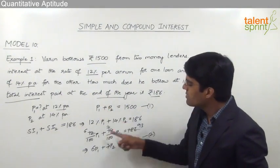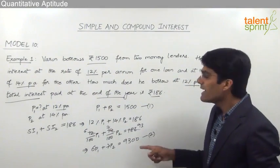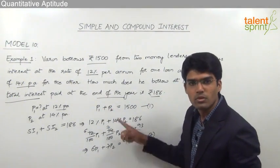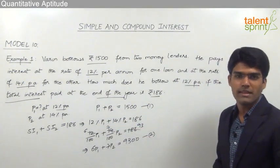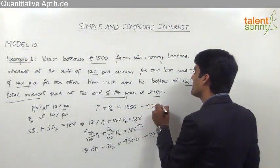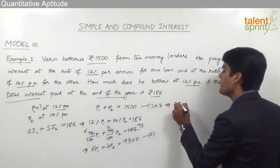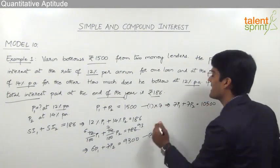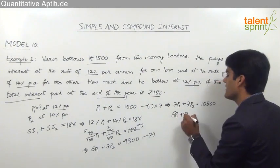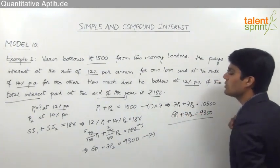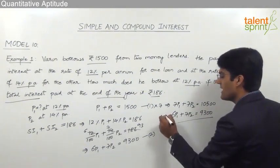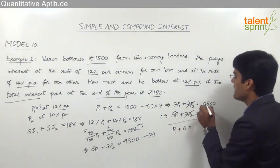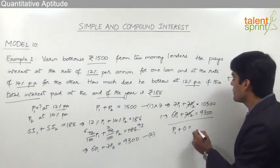To find P1, we need to cancel P2 from both equations. To do that, we multiply equation 1 by 7, because equation 2 already has 7P2. Once the coefficients are equal, the two terms can be cancelled by subtracting the equations. Multiplying equation 1 by 7 gives: 7P1 + 7P2 = 10,500. Equation 2 is: 6P1 + 7P2 = 9300. Subtracting: 7P1 − 6P1 = P1, and 7P2 − 7P2 cancels, giving P1 = 10,500 − 9,300 = Rs 1200.